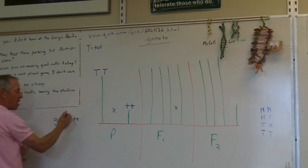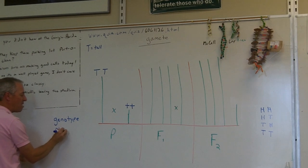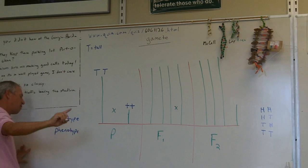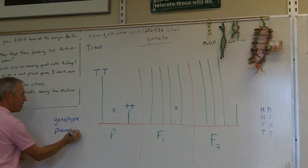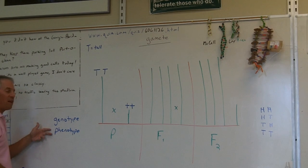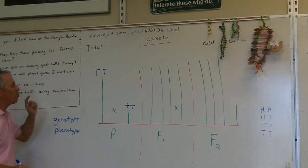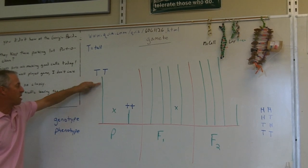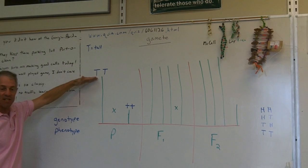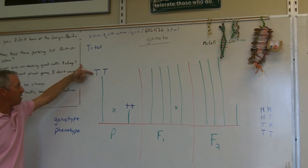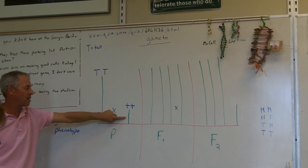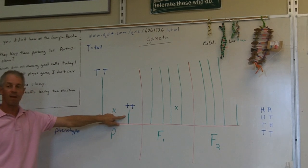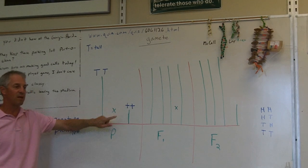The genotype are the letters; the phenotype is what it looks like. If I said what is the phenotype of this plant, you would say it's tall. If I said what's the genotype, you would say big T, big T. What's the phenotype of this little plant? It's short. What's the genotype? Little t, little t.